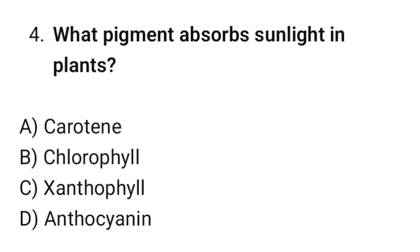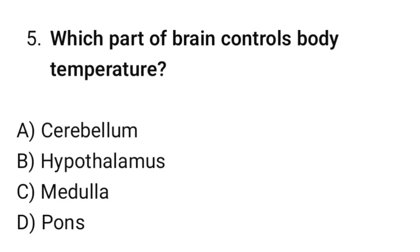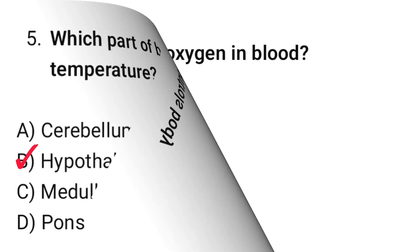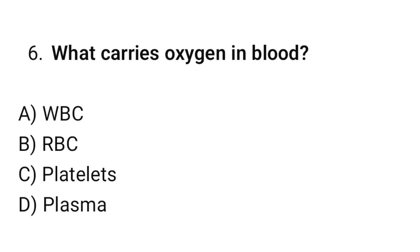Question number 4: What pigment absorbs sunlight in plants? The correct option is B — Chlorophyll. Question number 5: Which part of the brain controls body temperature? The correct option is B — Hypothalamus. Question number 6: What carries oxygen in blood? The correct option is B — RBC.